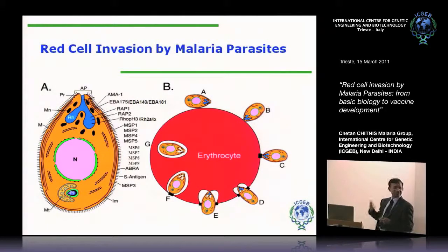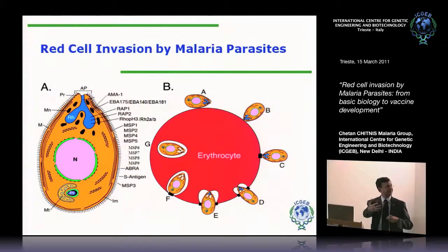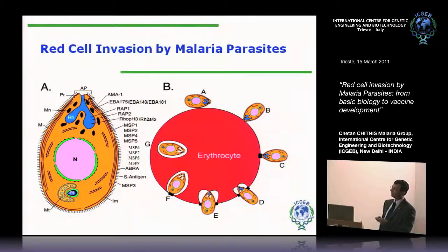Based on such studies, we have a model where the parasite first interacts — and this first interaction can take place on any part of the merozoite surface — it then reorients, then you see the formation of this junction. A lot of proteins involved in invasion are in micronemes and rhoptries, so at some point they have to be secreted to the surface to make contact with their receptors on the red cell. Then as this parasite moves into the growing vacuole, the junction moves around the merozoite, and finally the merozoite is in a vacuole surrounded by a vacuolar membrane.